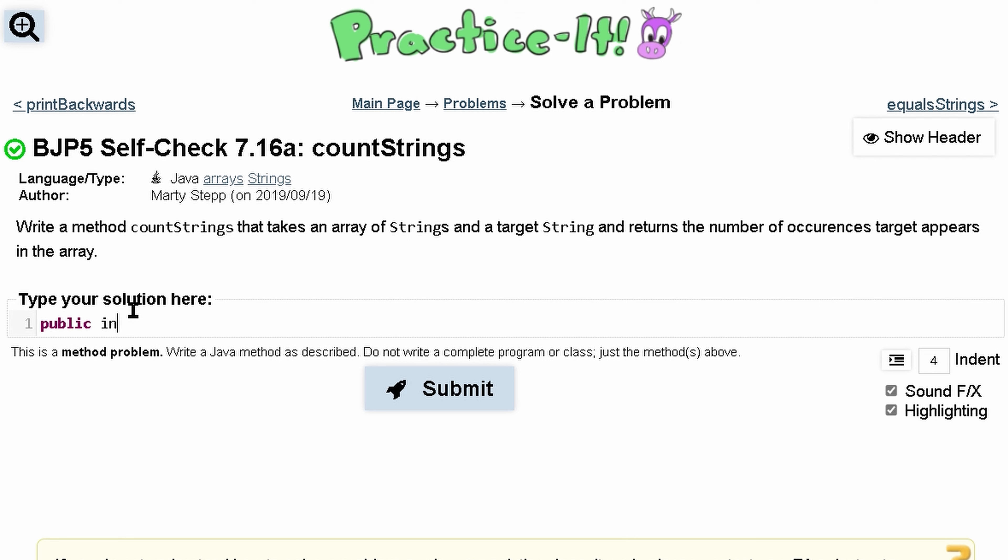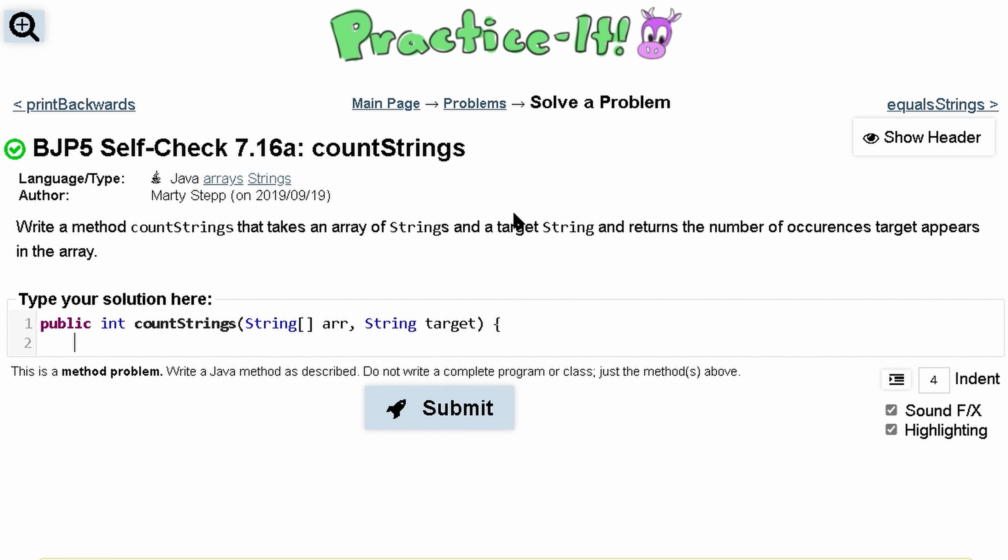Since we are returning an int, we're going to have public int, and we know the name of our method is going to be countStrings. We take a string array, so we'll do String, just call this arr, and we also take a target, so String arr and String target. That should be our header.